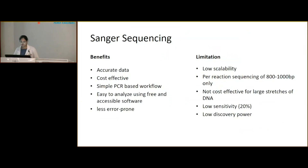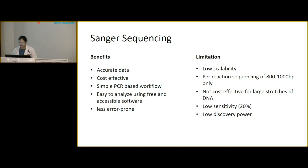Benefits of Sanger sequencing: it gives very accurate data, is cost-effective, has a simple PCR-based workflow, is easy to analyze, and is less error-prone. However, limitations include low scalability — for each reaction a particular amount of DNA is required — and you get only 1,000 base pairs per reaction.